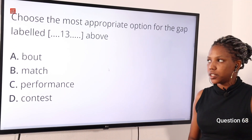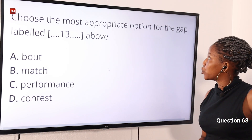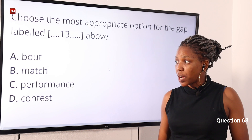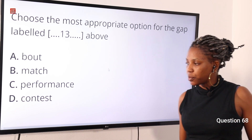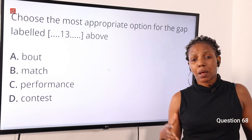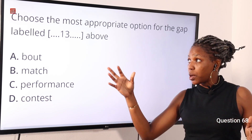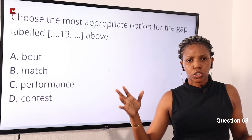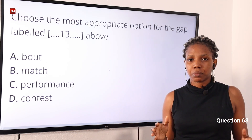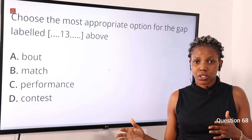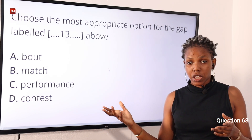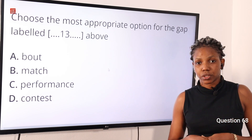Question 68: Choose the most appropriate option for the gap — option A: bout, option B: match, option C: performance, option D: contest. When you read this passage, you see it is trying to point out a short period of intense activity. In boxing, this is called a bout. So option A is the correct answer.